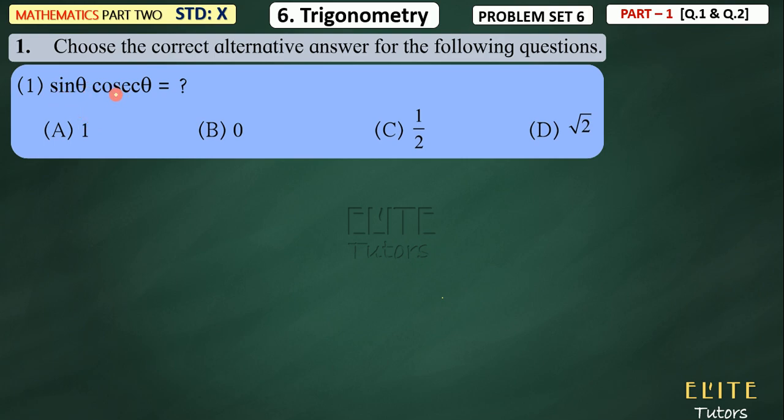So if you multiply sin theta by the same theta, then what will happen? If you don't understand this, or if you don't understand the first formula, then you will get the answer.